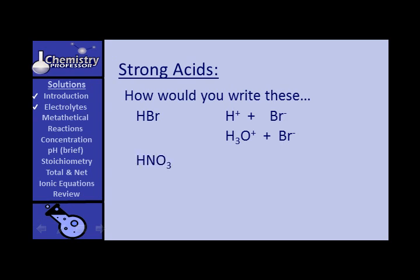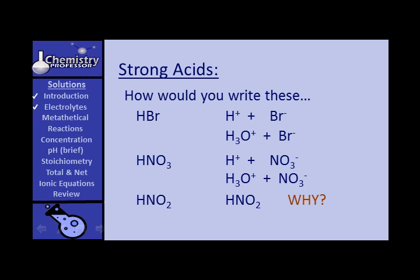What about nitric acid? Since it is a strong acid, you should write it as hydrogen ions and nitrate ions, or hydronium ions and nitrate ions. What about nitrous acid? You would write it as nitrous acid in molecular form. Why? It is not a strong acid — it is a weak acid — so you write it in molecular form.